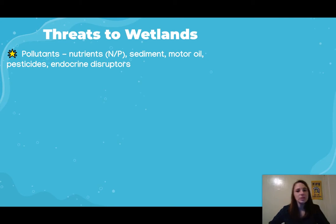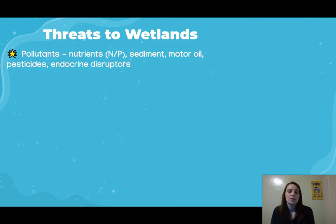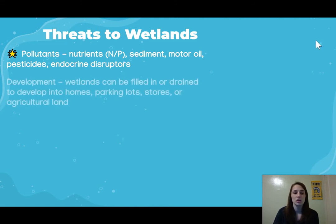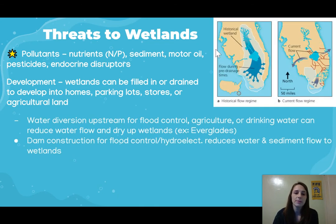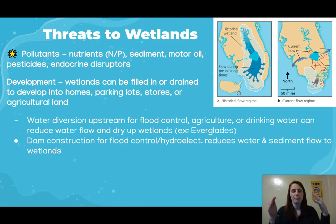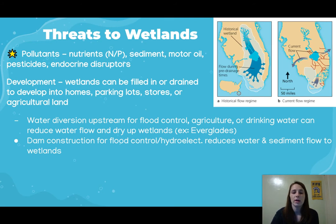Wetlands face several threats. Pollutants such as high nitrogen or phosphorus levels, sediment, motor oil, pesticides, and endocrine disruptors are major concerns. Development is another big threat — wetlands are often filled in or drained to build homes, parking lots, stores, or agricultural lands. Water diversion, including dam construction, reduces water flow upstream for flood control, agriculture, or drinking water, and ends up drying up wetlands.